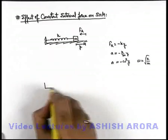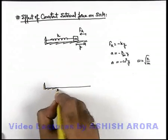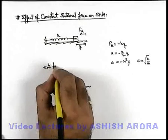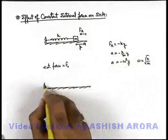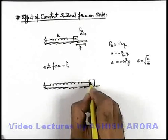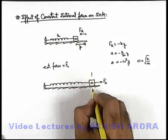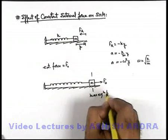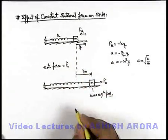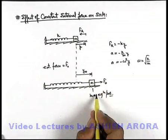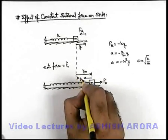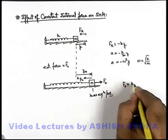Now let us consider the situation again. If in the same situation an external constant force F₀ is applied on the block, then the spring will be elongated to a new equilibrium position in the presence of force F₀. The block will be displaced by a distance y₀ due to the external force F₀, and the spring will apply a force k·y₀. So at the new equilibrium position we can write F₀ equals k·y₀.